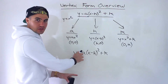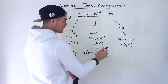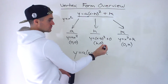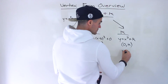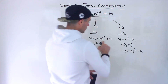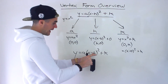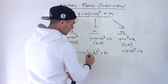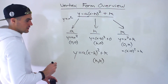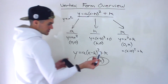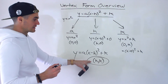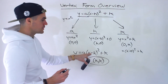The a value doesn't really affect the vertex, but the h and k values do. When we combine them, the h value was like x minus 0 squared, and the k value was 0 separately. Now that we have both an h and a k value, the vertex is simply going to be at (h, k). That's the most important characteristic we can get from this format — it's why it's called vertex form, because we can get the vertex right from the equation.